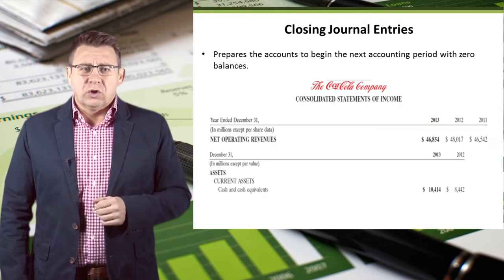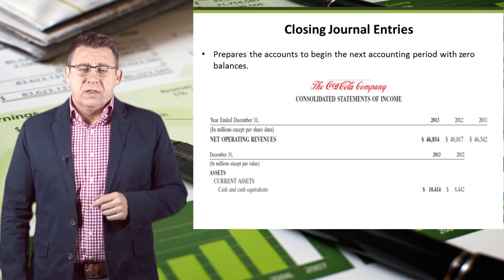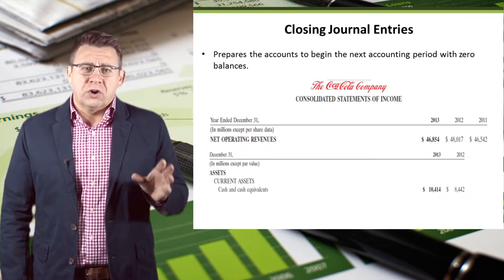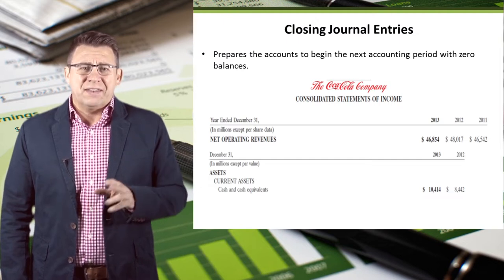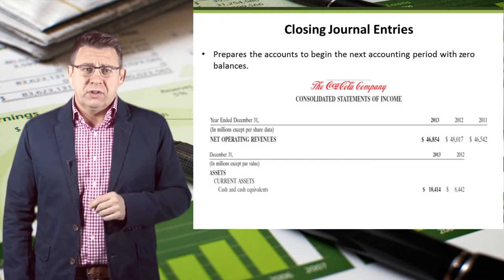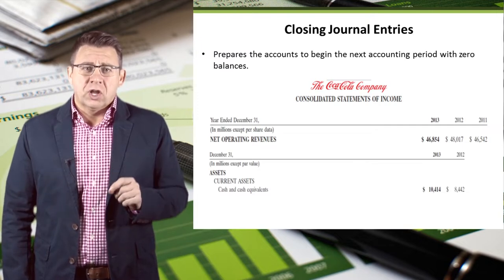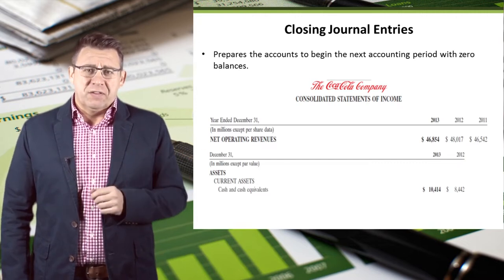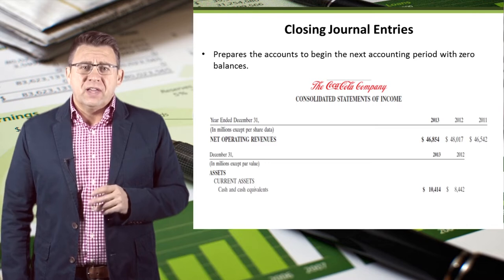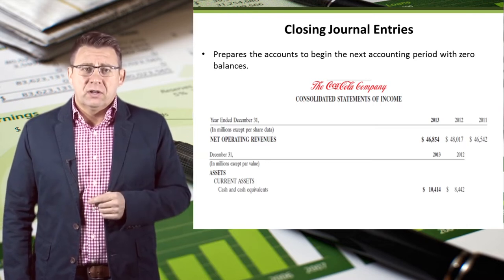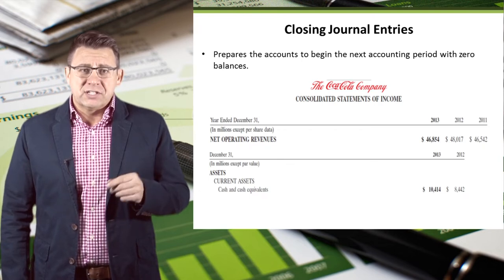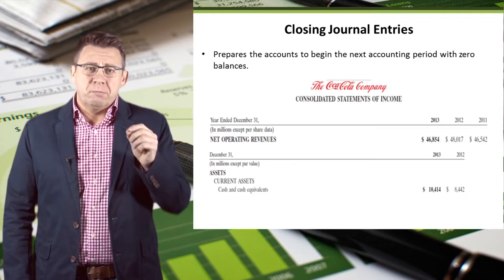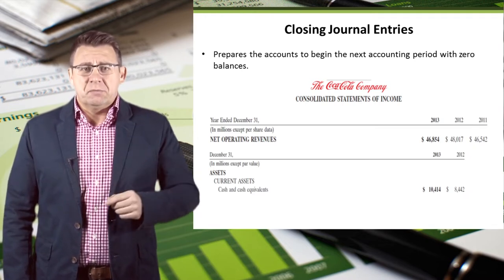Here is some data from Coca-Cola's 2013 financial statements. Operating revenues is a temporary account — the amounts shown are the amounts earned in that year, not the total amount of revenue Coke has ever earned. So each year, revenues are closed so that Coke can begin tracking revenues for the next year. Cash, on the other hand, is not closed. It wouldn't make sense to close this account and start the new year with a zero balance in cash. Coke would start the new year with the beginning balance, which was last year's ending balance.